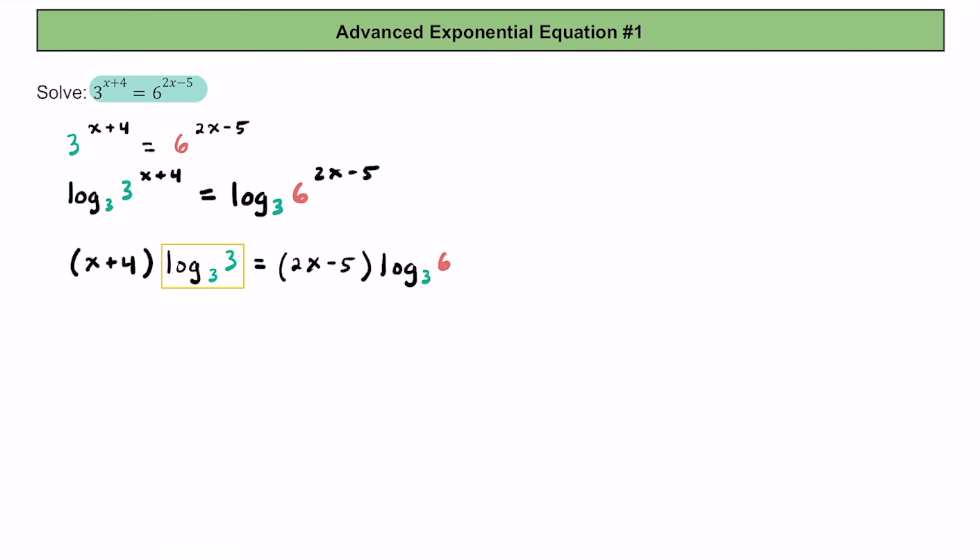On the left side, this log base 3 of 3 is just equal to 1, so we don't really need to write that. So we can just simplify the left side of the equation to just say x plus 4. Now on the right side of the equation, let's distribute this log base 3 of 6 to this 2x as well as to this minus 5.